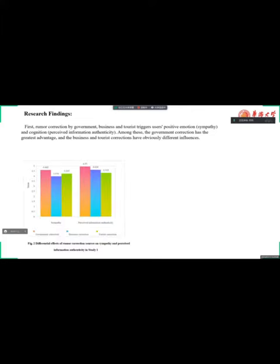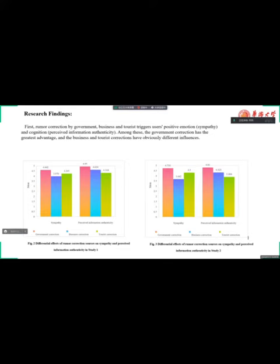After carrying out three scenario experiments, we draw some conclusions. First, rumor correction by governments, businesses, and tourists triggers positive emotion and cognition. Among these, the government correction has the greatest advantage, and the business and tourist corrections have different influences.